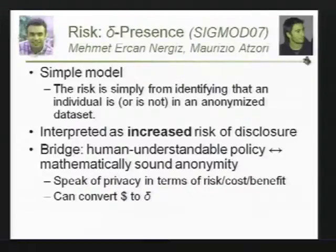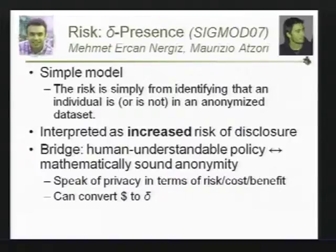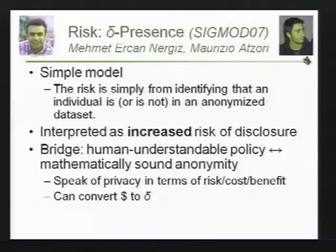This work came out in SIGMOD 2007. It's a simple model. The way you interpret it is as the increased risk of disclosure. The adversary already has some knowledge — they know my name, my birth date, my zip code. If I make this data available, how much more do they learn in terms of identifying whether or not I'm in that data set? We can even work this out where you can talk about a bridge between what would the harm done to me be. Perhaps I could measure that harm in a dollars-and-cents cost, and then convert that and say: how much do you have to anonymize the data to keep that harm below a certain level? And it may be different for different individuals.